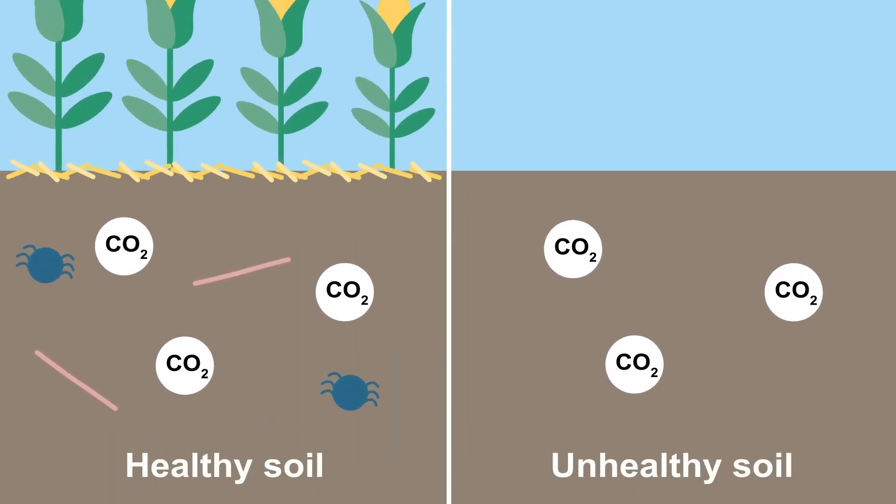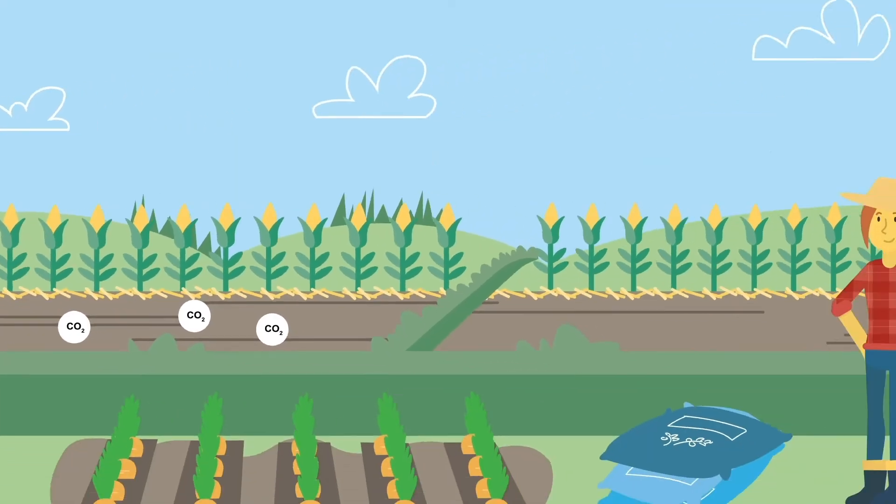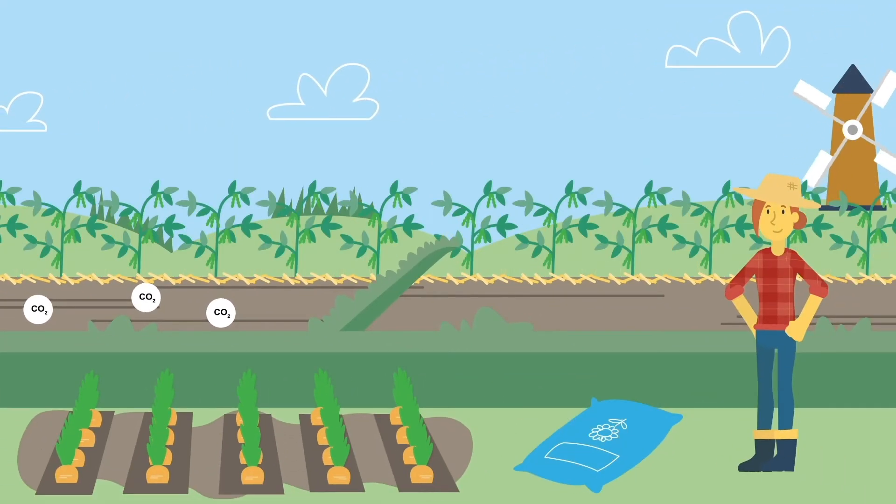By keeping soil in use and covered all year round and minimizing the turning of the soil, farmers can help reduce emissions and even remove them from the atmosphere.